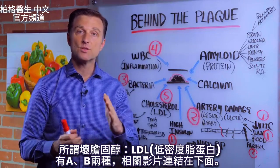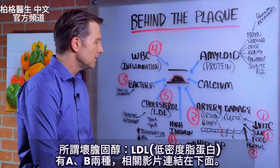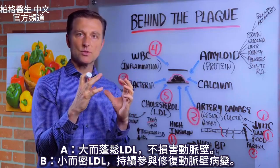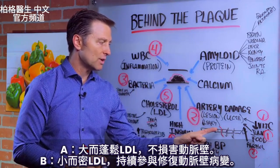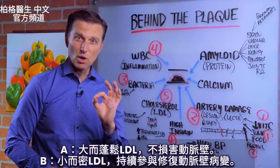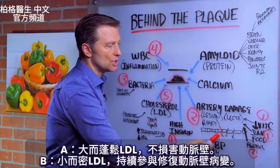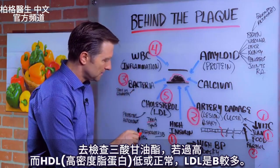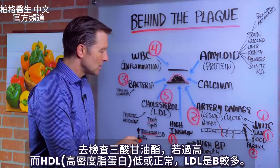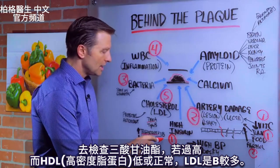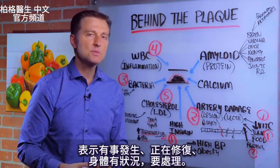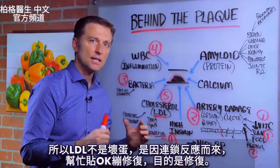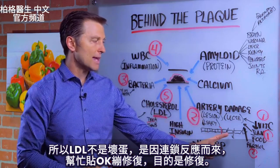There are two types of LDL, which is so-called bad cholesterol. Type A is the big, fluffy type of cholesterol that's not involved in doing anything with the artery wall. Type B is very small and dense, and those are the ones always involved in trying to heal the lesion in the wall. How do you know if you have type A or type B? Because they're usually combined, you can't tell directly — you look at your triglycerides. If your triglycerides are high and your HDL is low or possibly normal, then you have more type B. That means there's some type of healing going on in your body that you need to address.